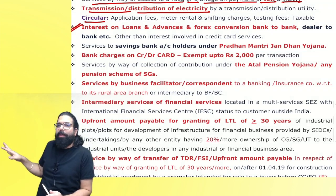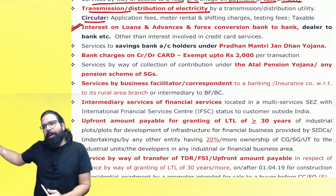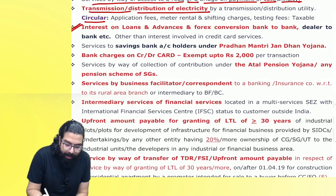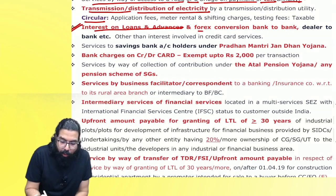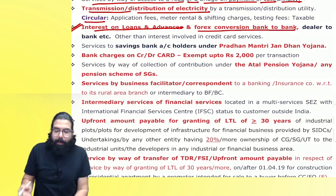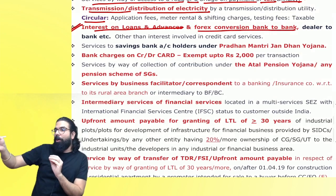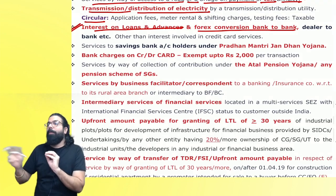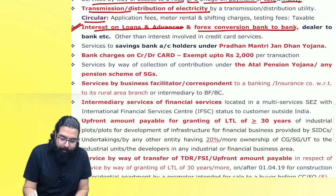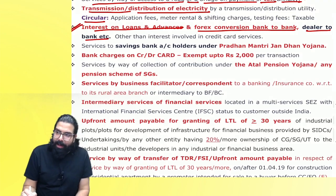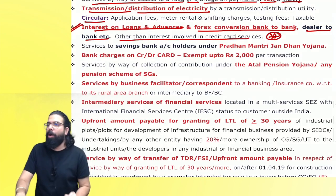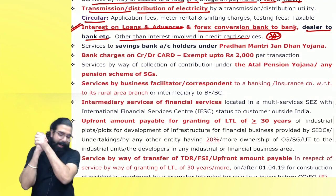If I gave someone loans in advance and received interest, that is always exempt. Giving of money to use and taking interest or discount is always exempt. Interest on loans and advances is exempt. Also, forex conversion between bank to bank — a bank giving dollars and another bank giving INR — forex conversion between bank to bank, or bank and dealer to bank, is always exempt.